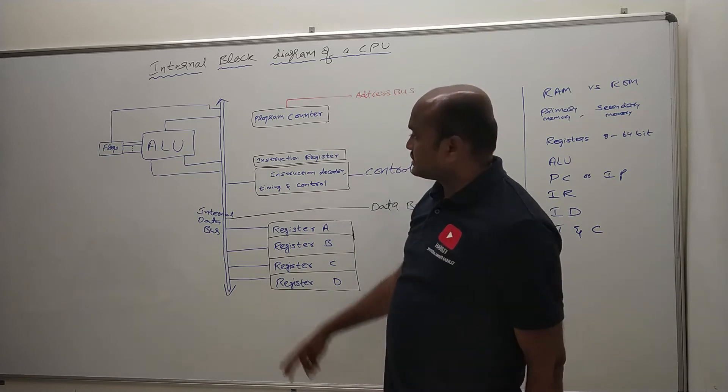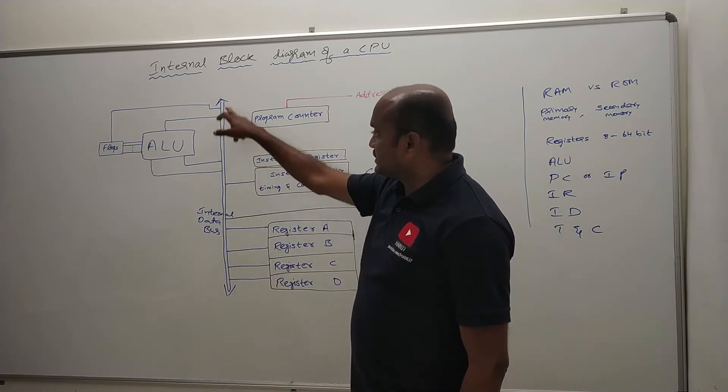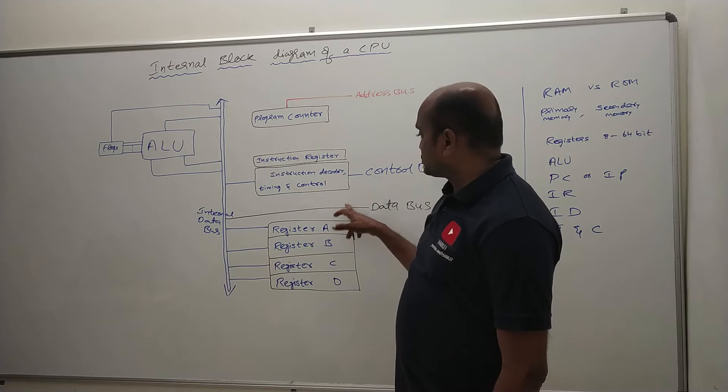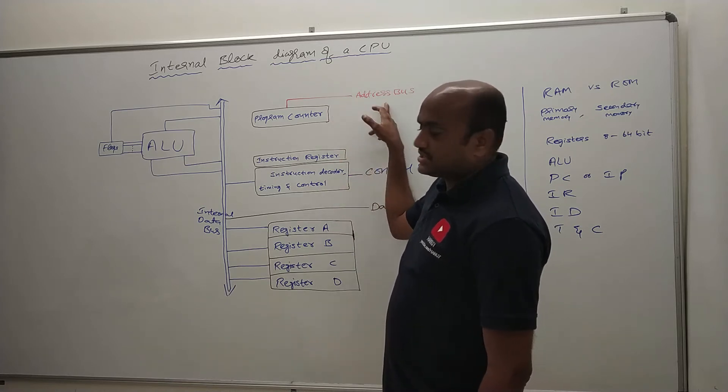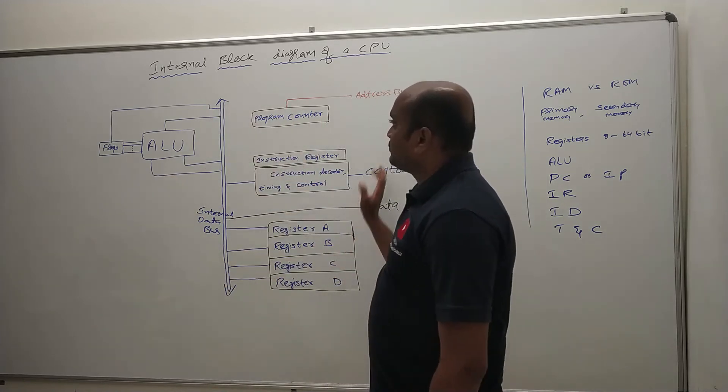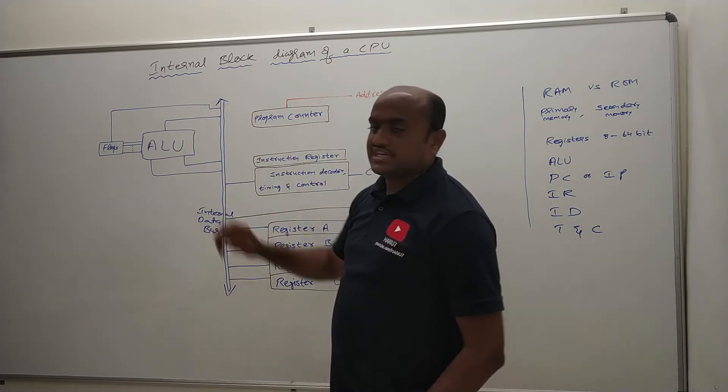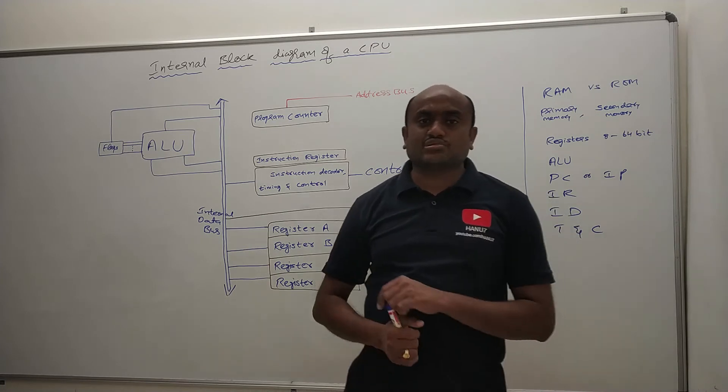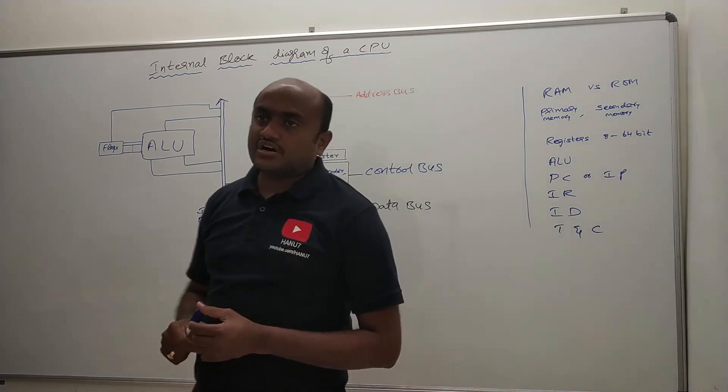Here also you can see there are buses. This is internal data bus and these three are the buses: address bus, control bus and data bus.